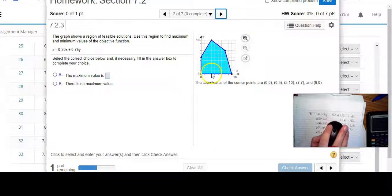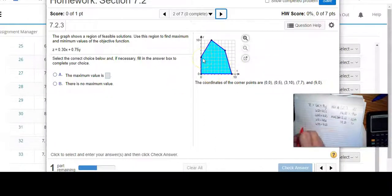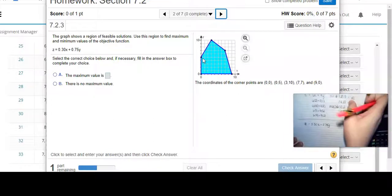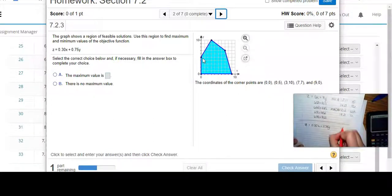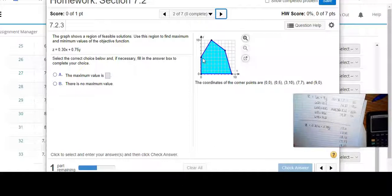We've got this little polygon going on here. My objective function is going to be z equals 0.30x plus 0.75y. And I am given 5 different coordinates. So I've got 0,0, 0,5, I've got 3,10, 7,7, and I've got 9,0.